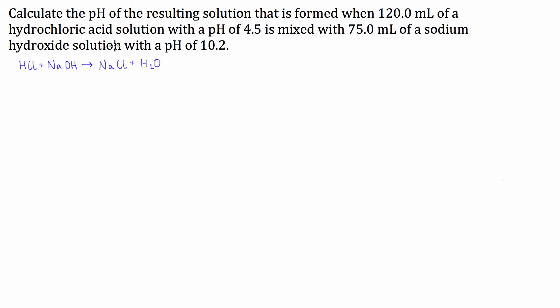We're going to have two different amounts of acid and base being mixed together. What we're going to have to do is figure out the number of moles of each to begin with, and then we're going to have to see which one is in excess — which one is going to be left over. So to start with, let's calculate the number of moles of hydrogen ions in the hydrochloric acid.